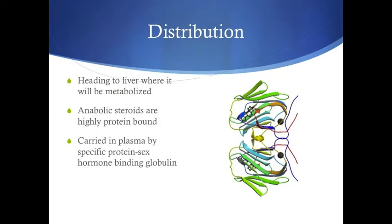After absorption by simple diffusion, Dianabol will be distributed to the liver where it will be metabolized. To get to the liver, it will cross multiple cell membranes via simple diffusion. Simple diffusion is utilized as it is a non-ionized molecule.